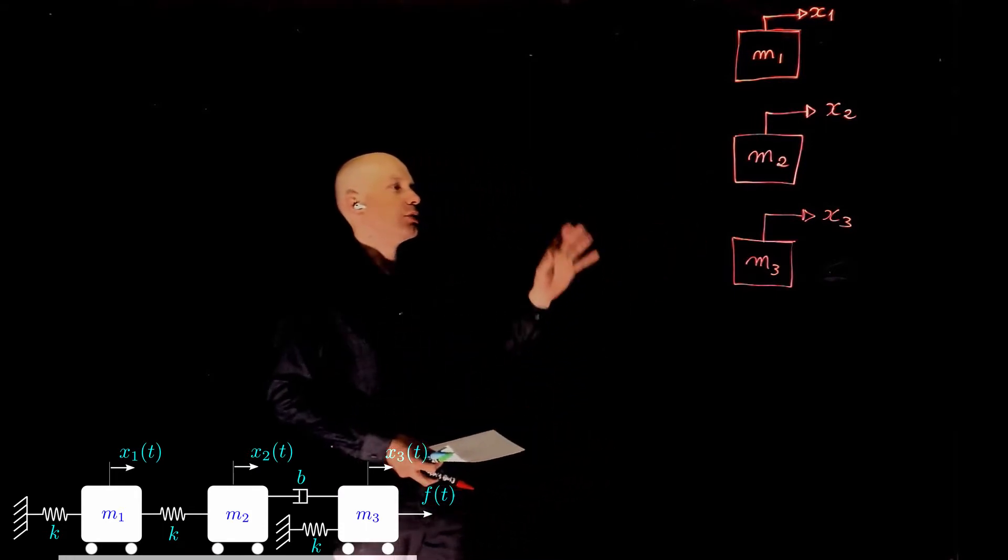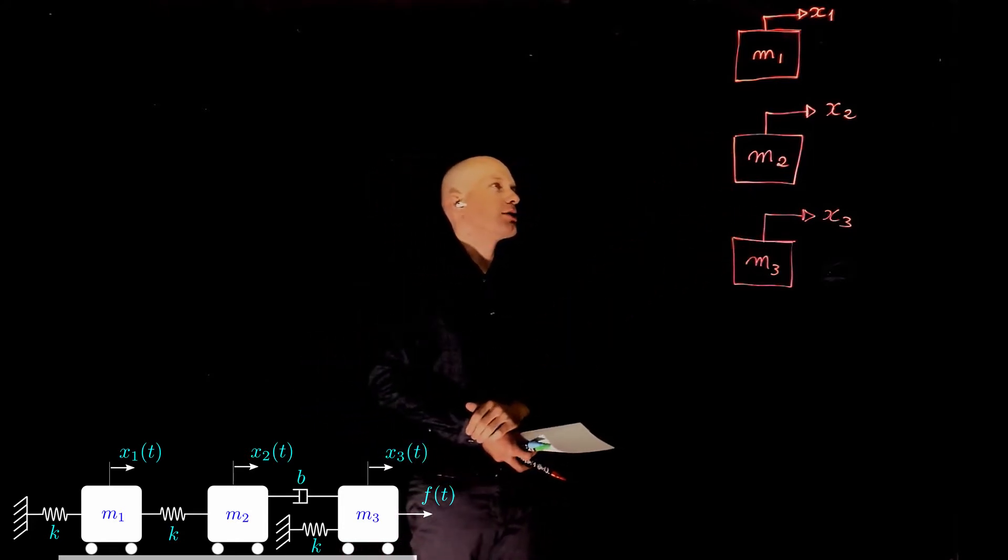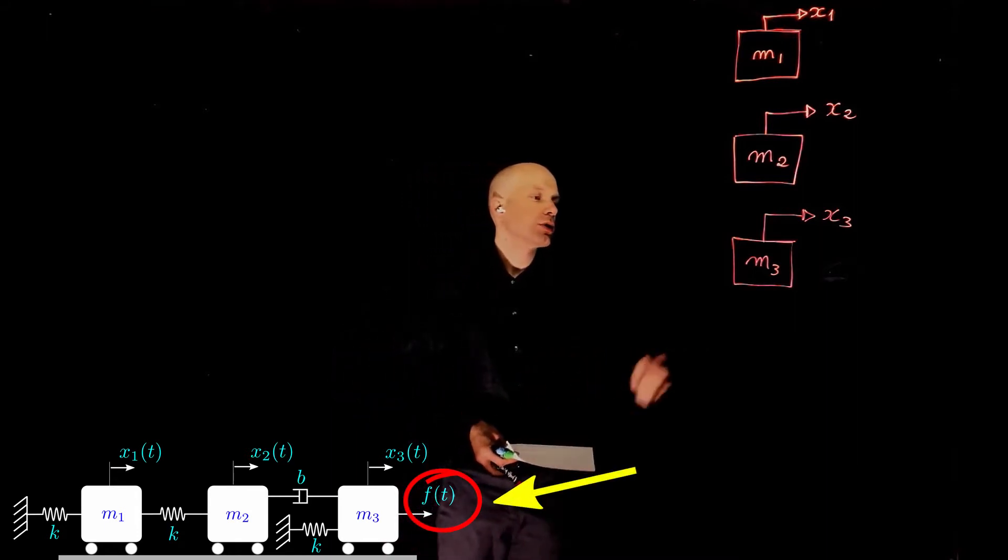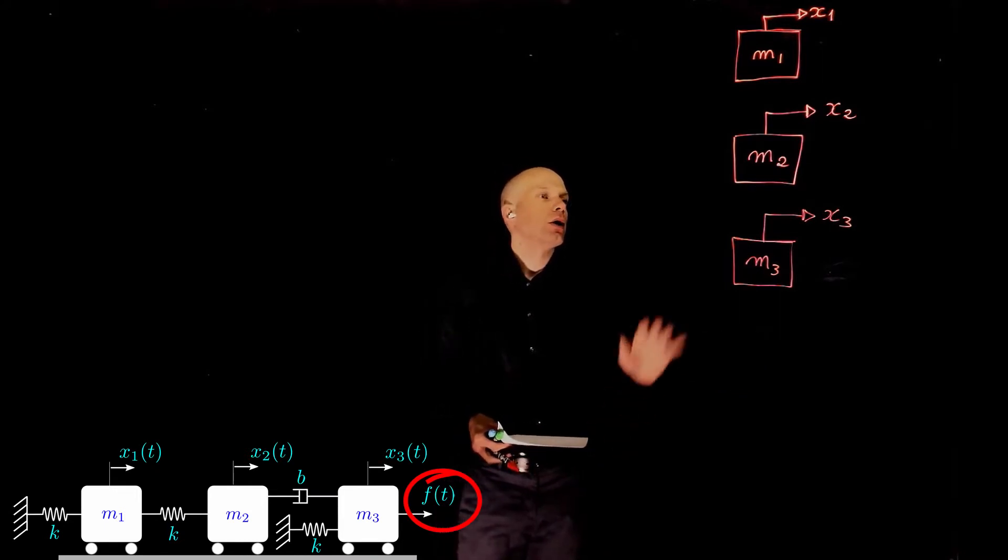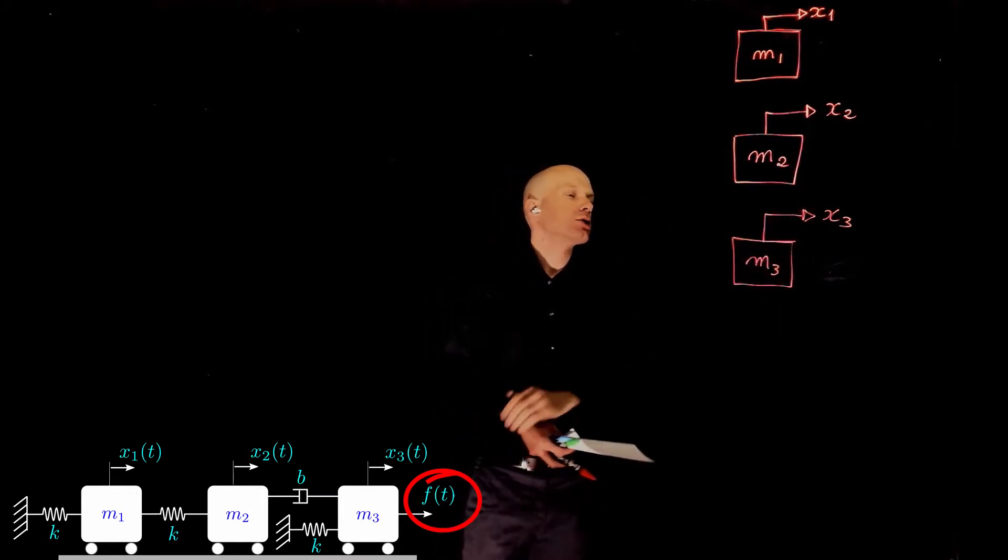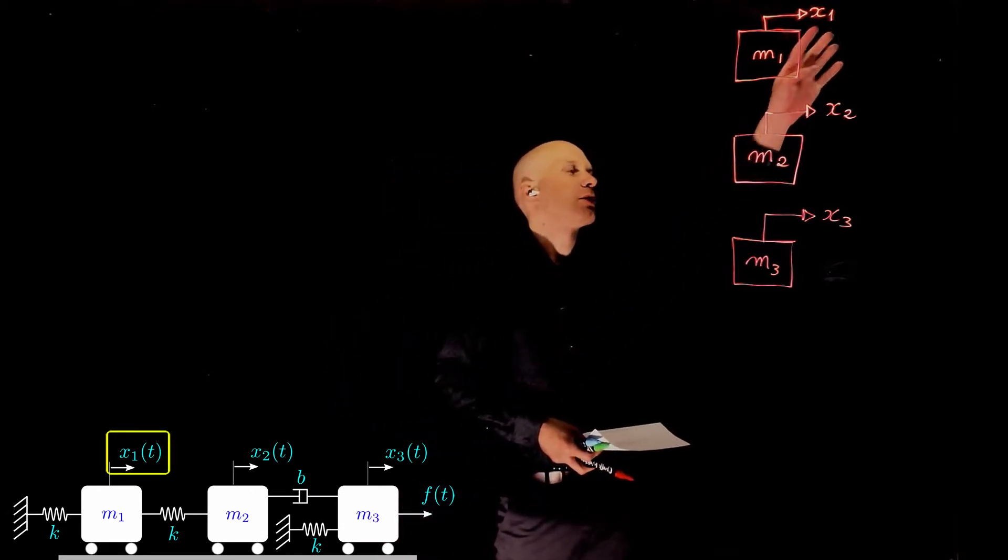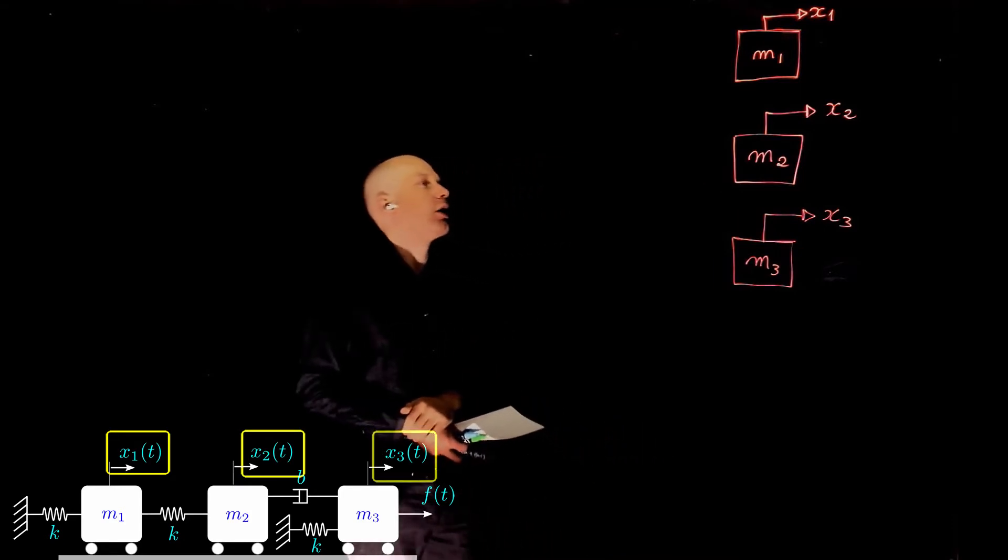The first step is to create the block diagram of each mass. I have here all three masses and given that the force is pulling mass m3 to the right, I'm assuming that all masses will move to the right. I'm calling the displacement of mass 1 x1, mass 2 x2, and mass 3 x3.